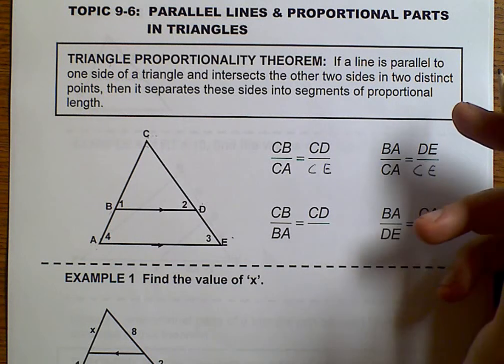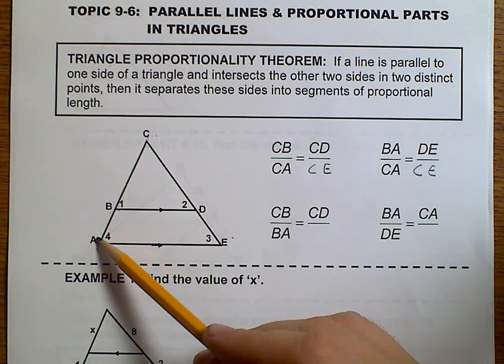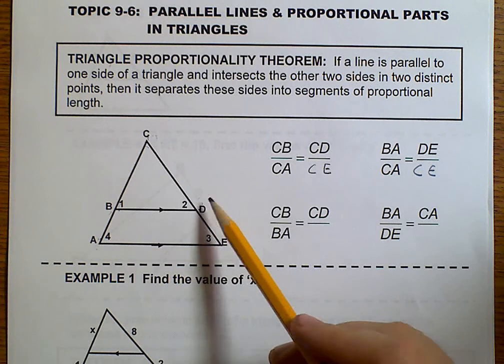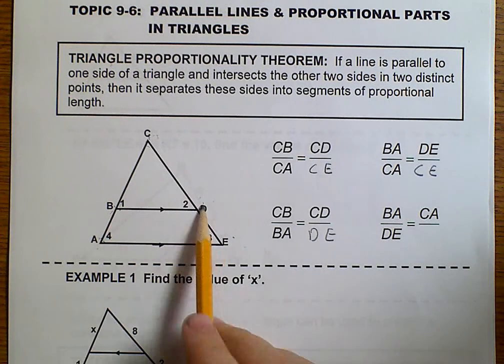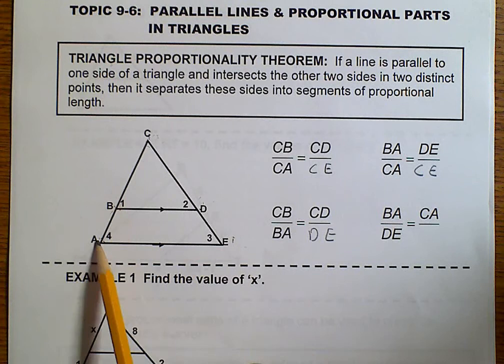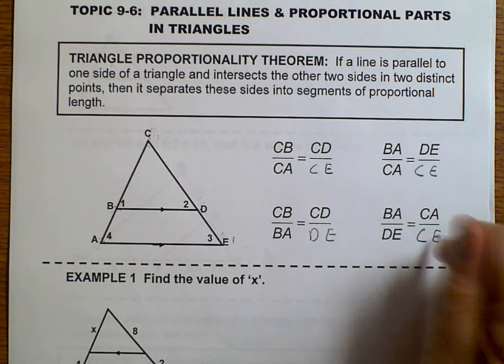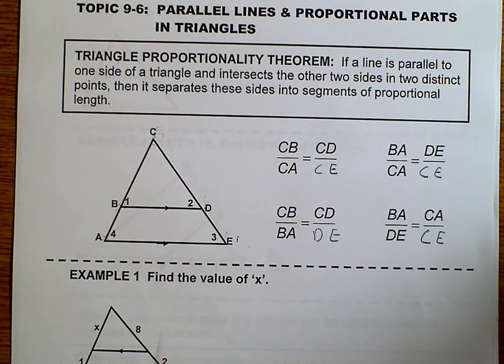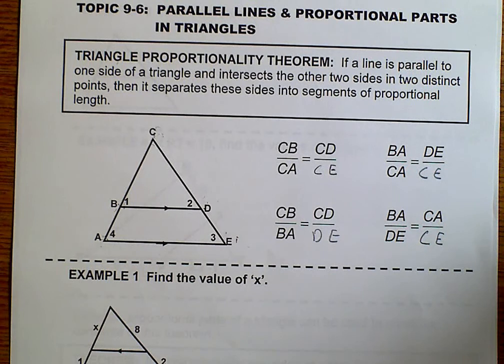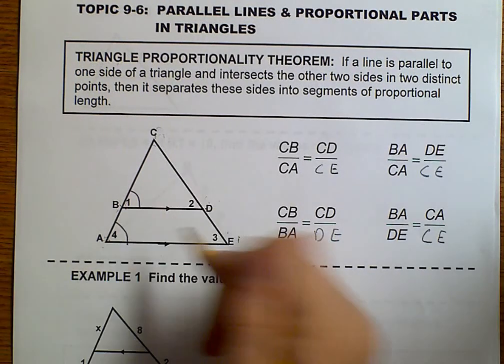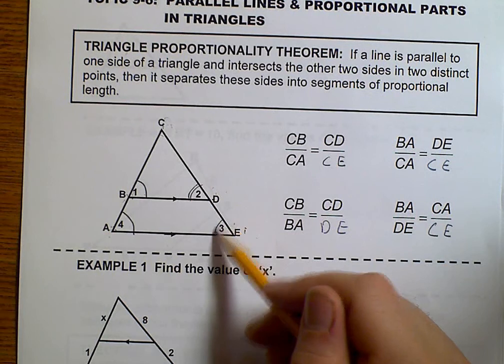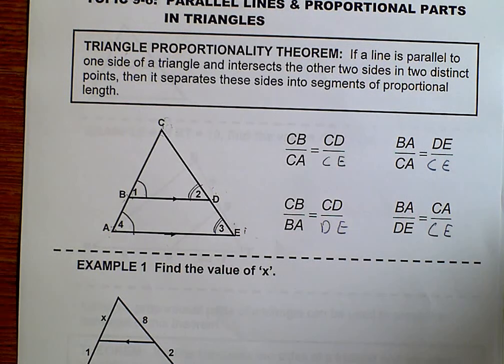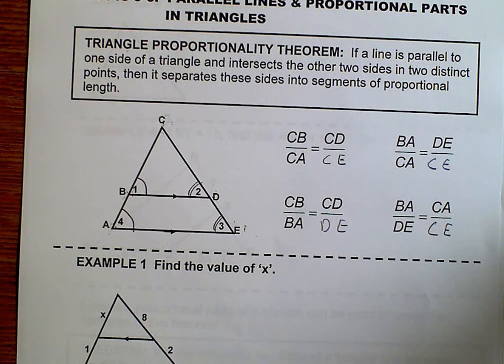It also says that CB relates to BA, that CD relates to DE, and that BA relates to DE in the same way that CA relates to CE. Basically, what it means is that if these are parallel, then we have a lot of proportions that we can use. Some other things that I want to point out is that 1 and 4 are corresponding angles, so they're congruent, and 2 and 3 are also corresponding angles, so they are congruent.